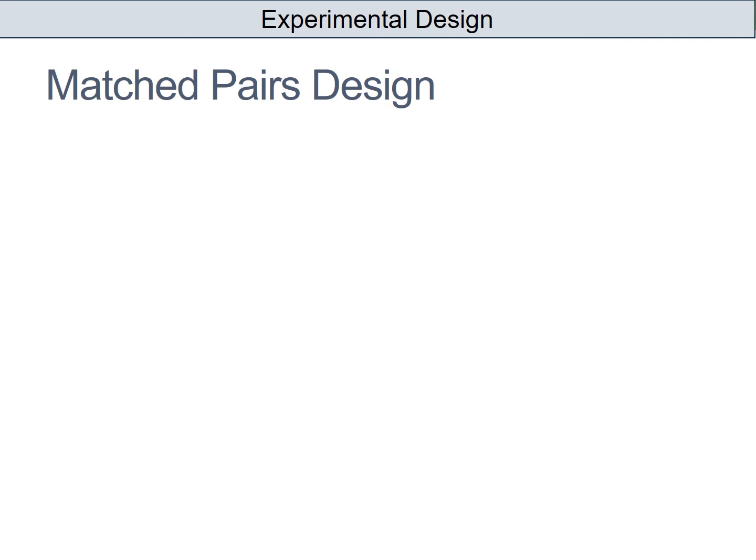The third type of design is called a matched pairs design. This is similar to an independent groups design in that you're using two different groups of people, but you try to make it as similar to a repeated measures design as possible by matching those individuals on variables which you think matter.